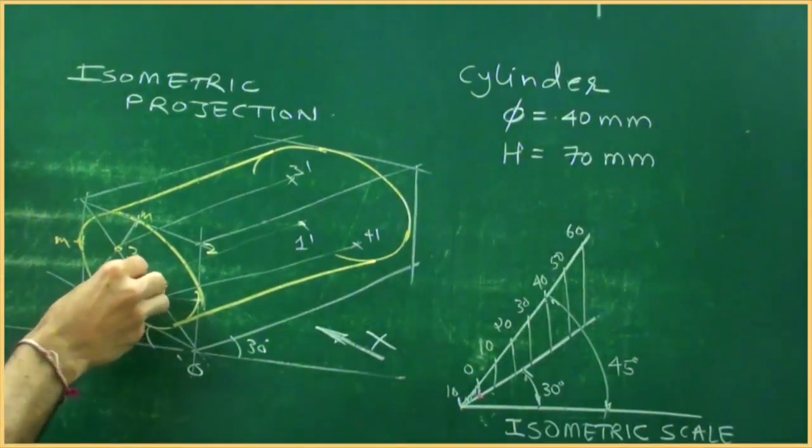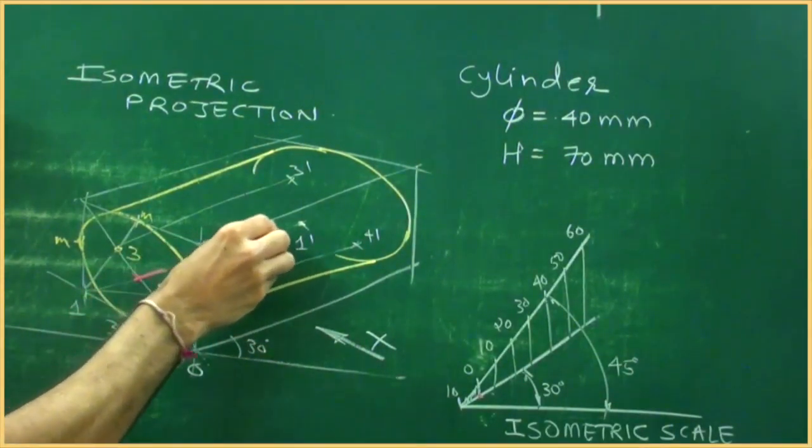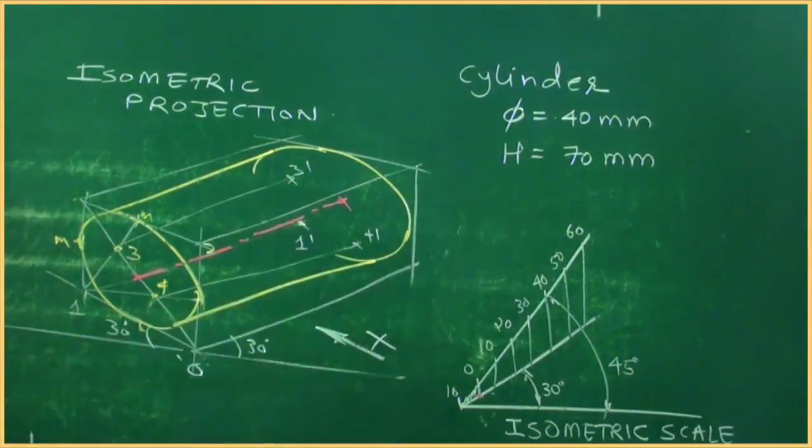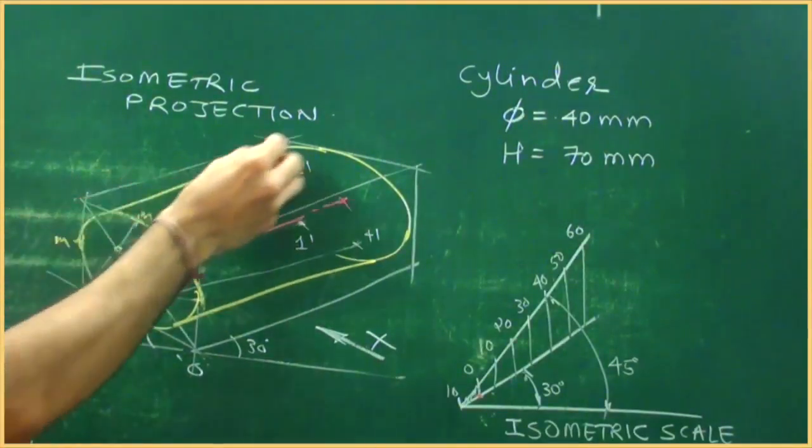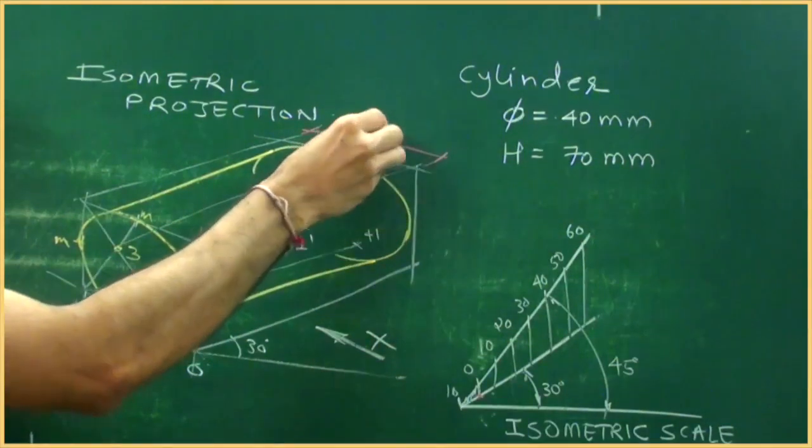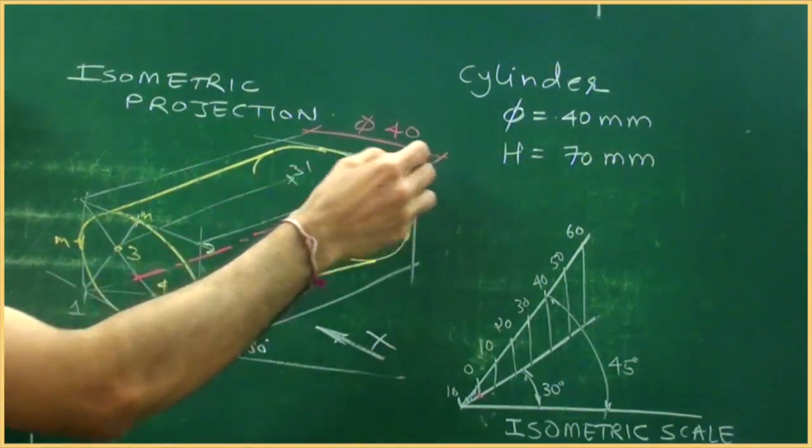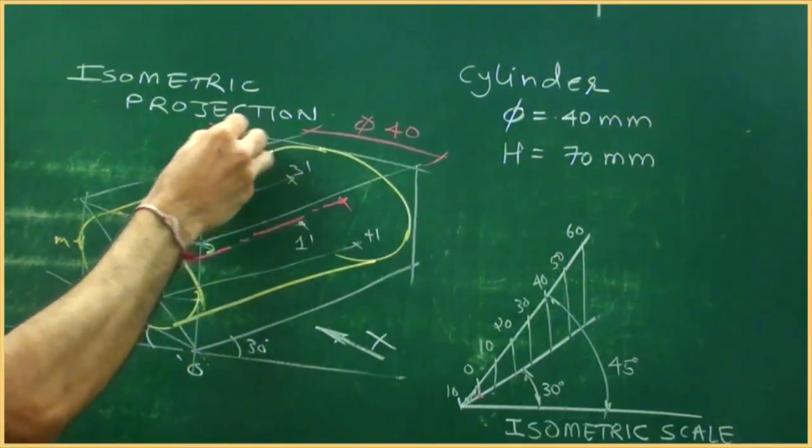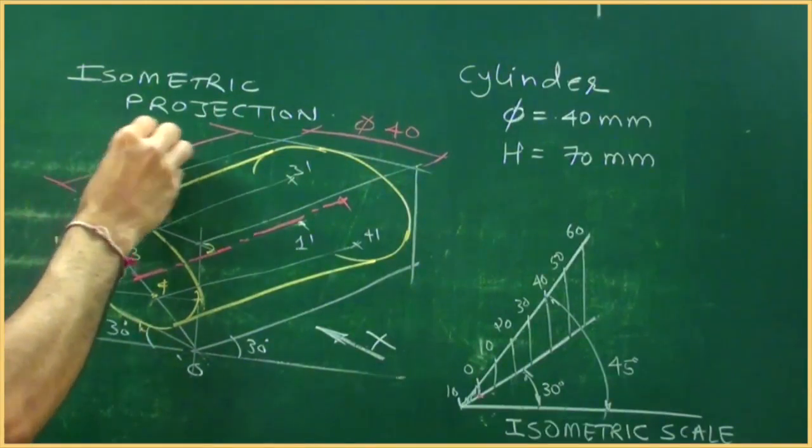and this will be axis, diameter is 40 and length is 70